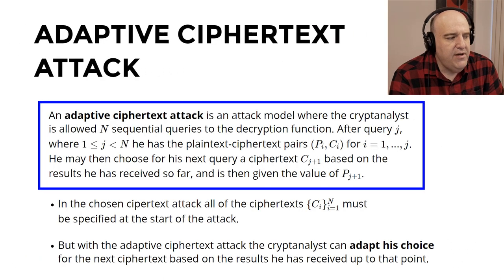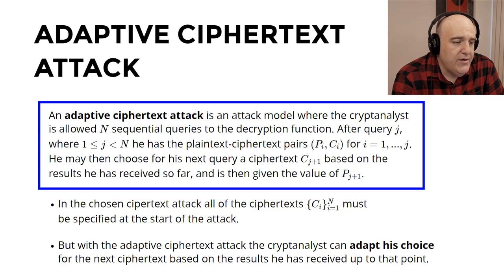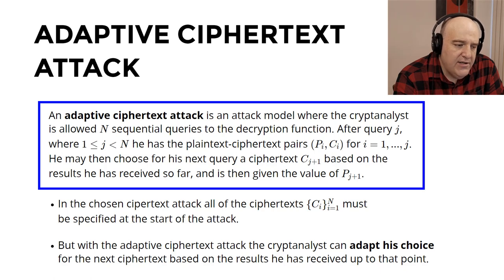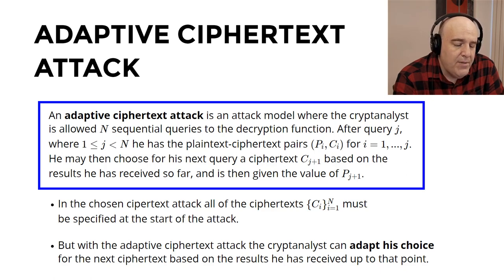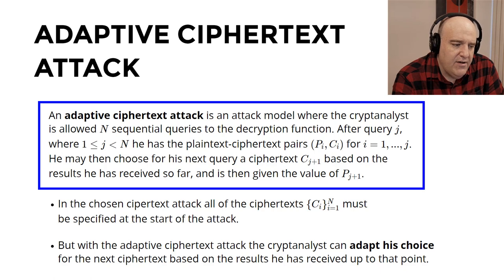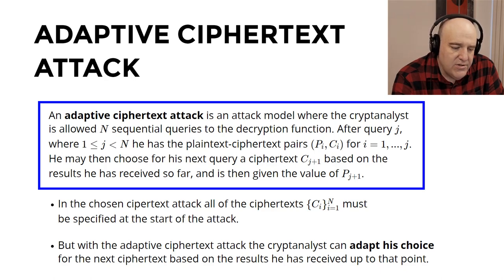For the adaptive ciphertext attack, the cryptanalyst is allowed n sequential queries to the decryption function. After query j (where j < n), he has j plaintext-ciphertext pairs (Pᵢ, Cᵢ). For his next query — the j+1 query — he makes up a ciphertext C_{j+1}, choosing it based on the results he's received so far, and is then given the plaintext P_{j+1}. In the chosen ciphertext attack, all ciphertexts had to be chosen at the start. But in the adaptive ciphertext attack, he can adapt his choice for the next ciphertext based on the results received up to that point.